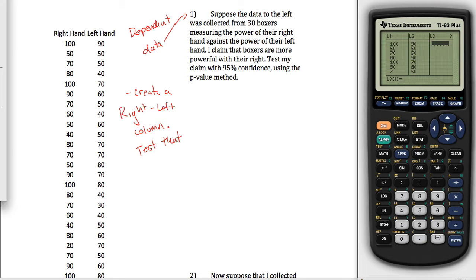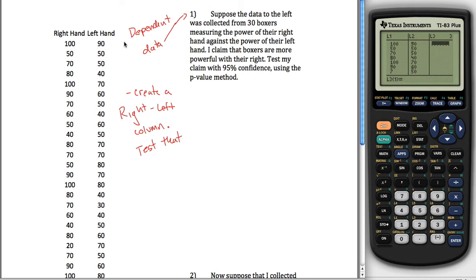And then what you want to do is create a third list that has the differences. So 100 minus 90, the difference would be 10. 50 minus 50, the difference would be 0, and so on. So I want to create a left-minus-right column. And you can do that. With this data, it wouldn't be that bad. You can do all the subtraction and then type all those in. But with some data, it would be a pain to do that, so there's a way your calculator can do it.